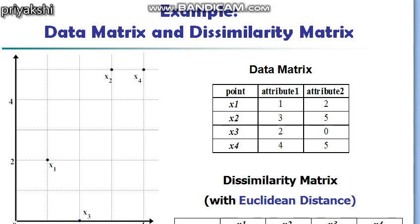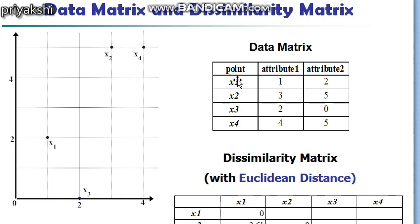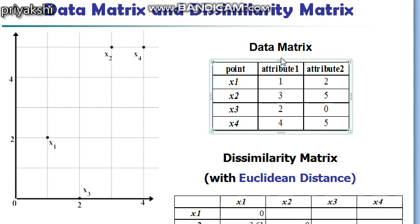Suppose we are considering four students — x1, x2, x3, and x4. We are considering two attributes: attribute one and attribute two. Think of two class tests: class test one and class test two. These are the marks obtained in class test one out of five, and these are the marks obtained in class test two, also out of five. So student x1 gets one out of five in the first class test and two out of five in the second.